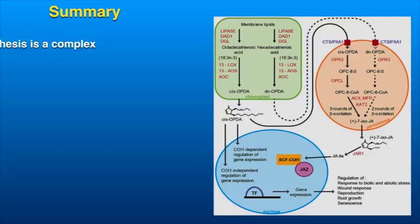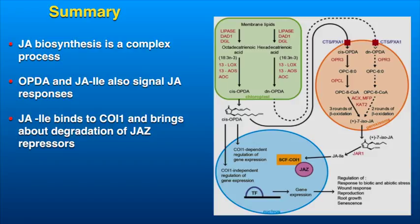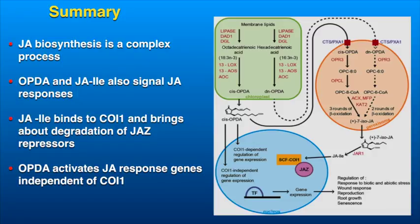To summarize, JA biosynthesis involves a complex, highly regulated pathway. The JA biosynthesis intermediate OPDA and JA conjugates like JA-isoleucine are also involved in signaling for JA responses. While JA-isoleucine binds to the F-box protein COI1, OPDA is also known to activate JA response genes independent of COI1-mediated degradation of JAS repressors. JA response genes, when activated, protect plants against biotic and abiotic stress, which makes this hormone of great interest in crop protection.